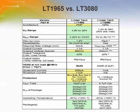These LDOs are targeted at different end applications. The LT3080 is more designed for surface mount systems, direct paralleling, and ease of use, whereas the LT1965 is more suited for general purpose conversion under potentially harsher conditions.